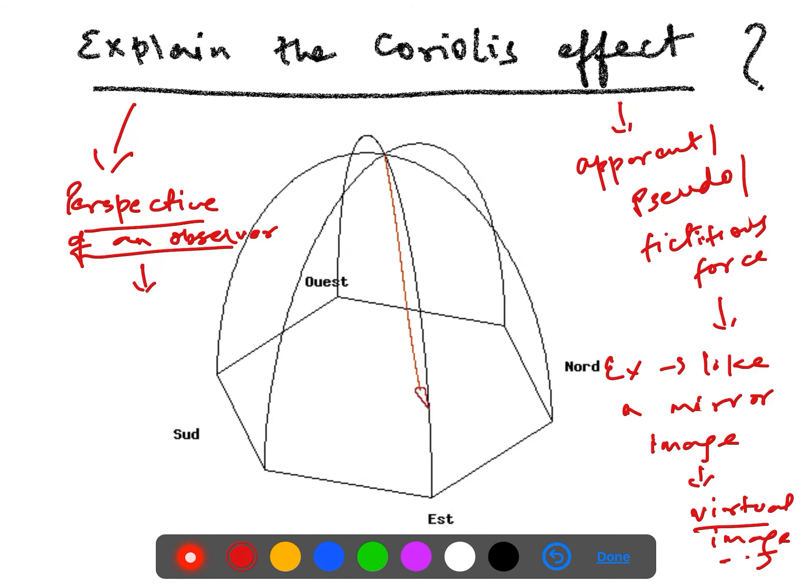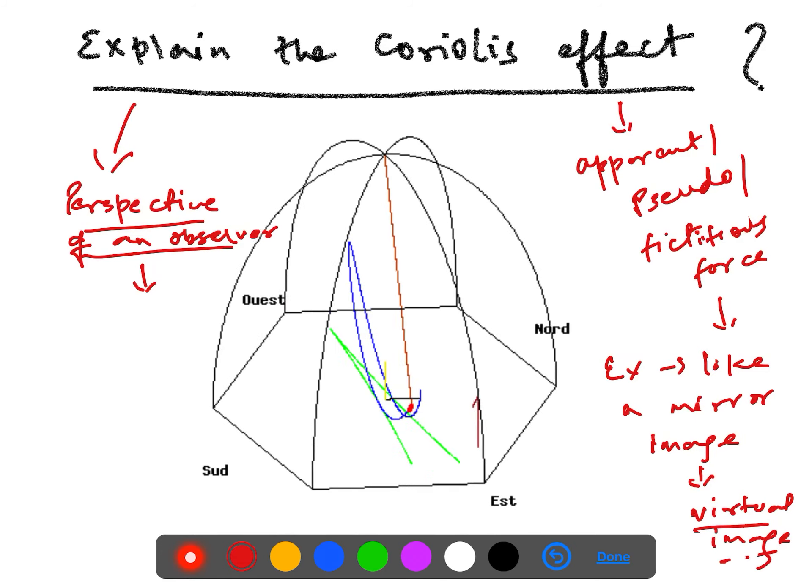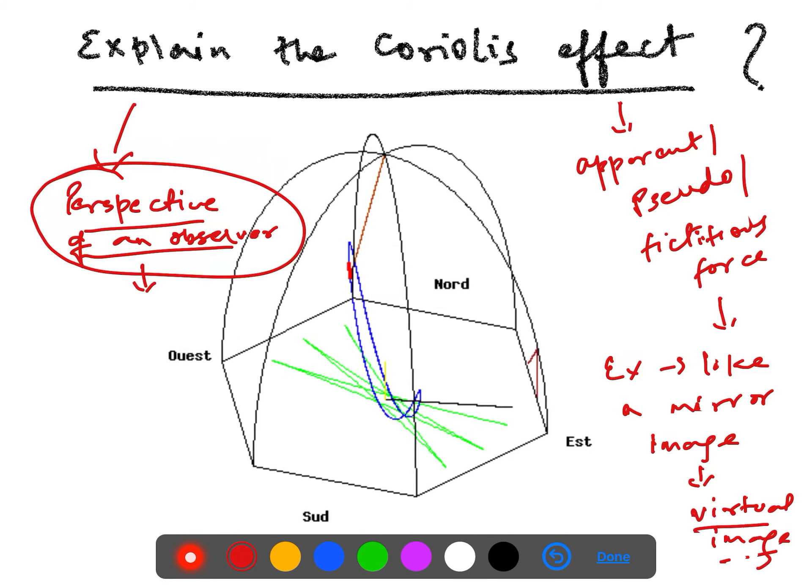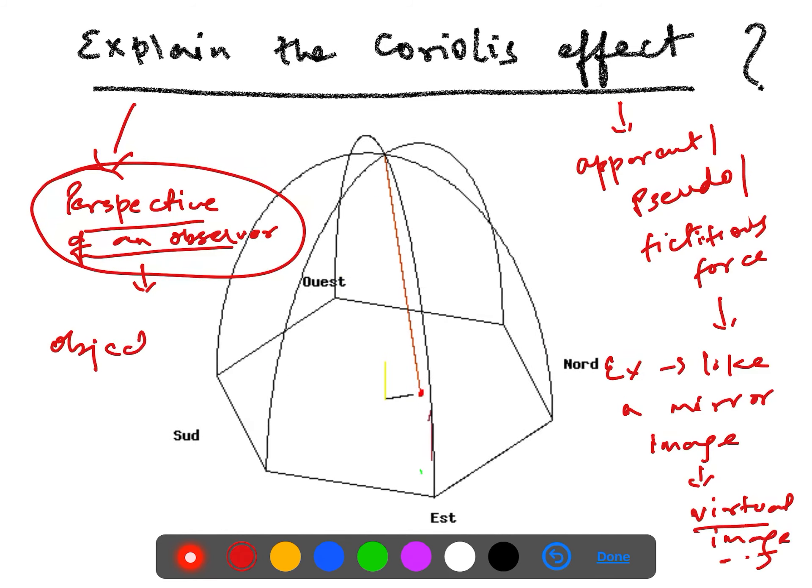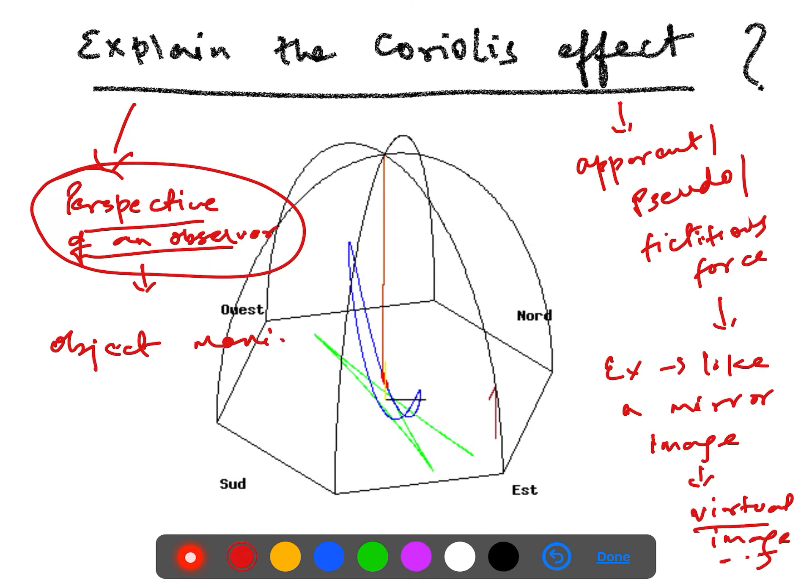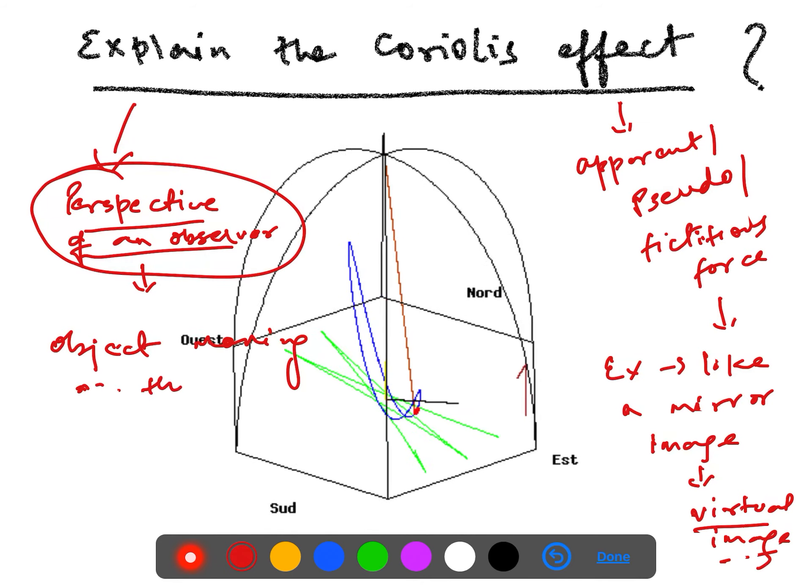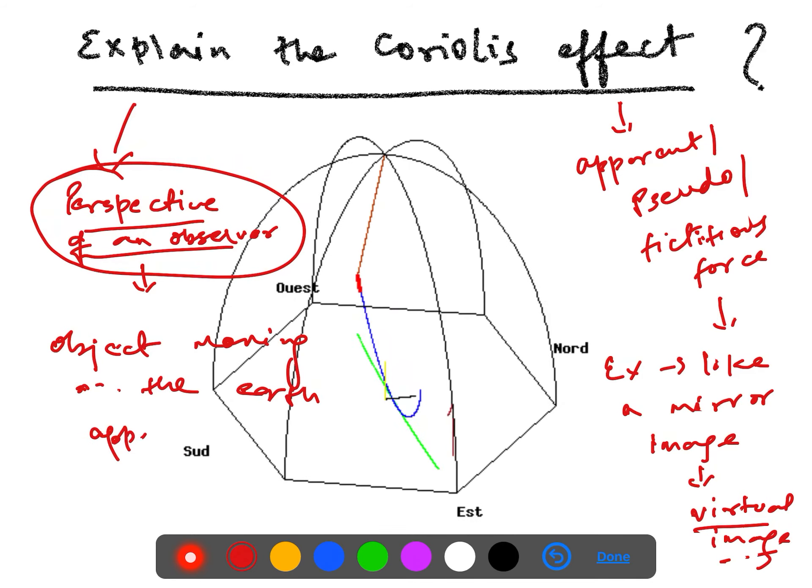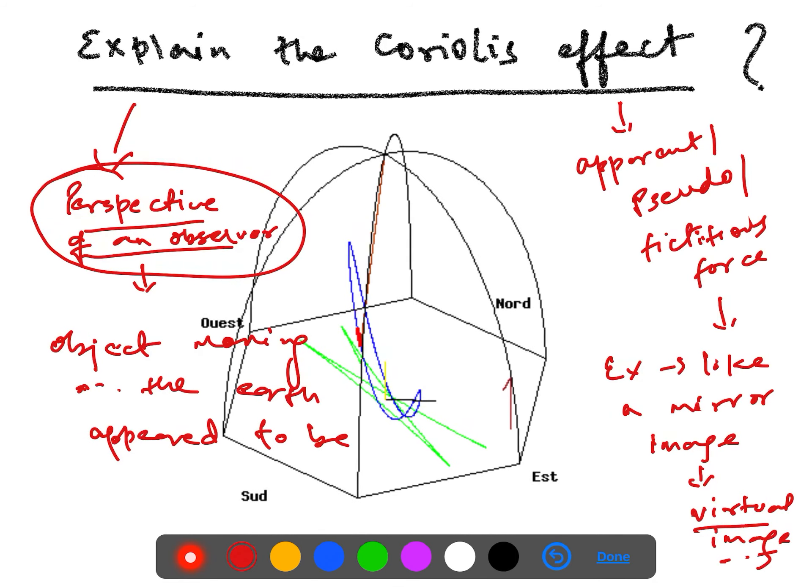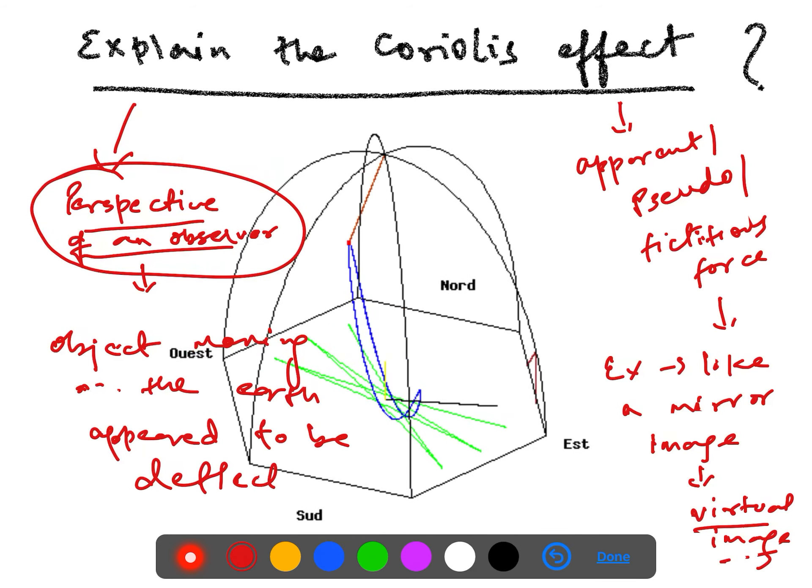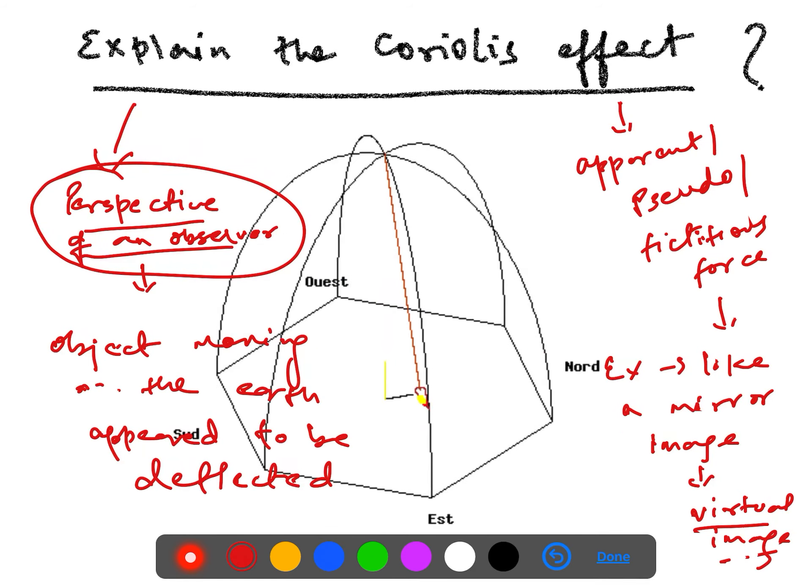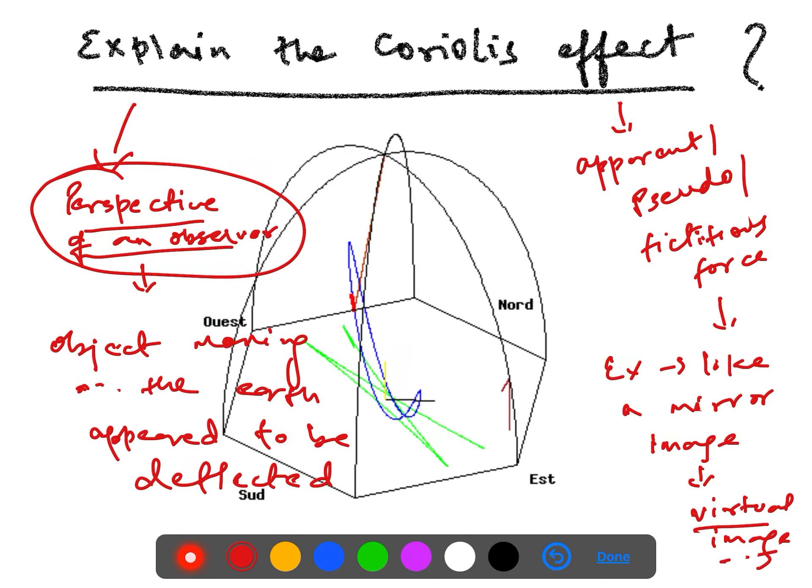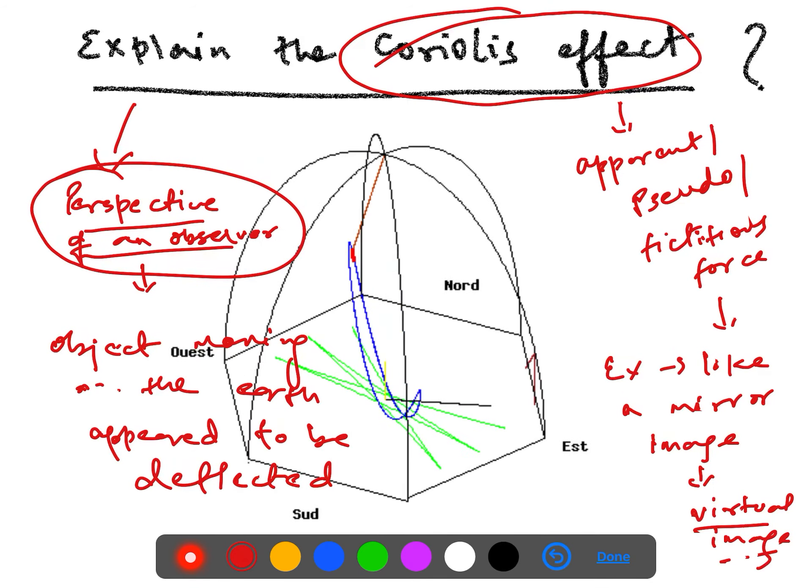From the perspective of an observer, object moving on the earth appear to be deflected, and this deflective force or this deflection of a moving object is only defined as what is called Coriolis effect.